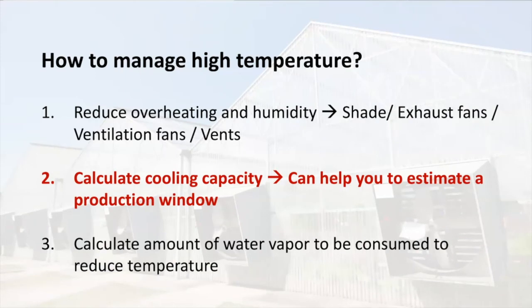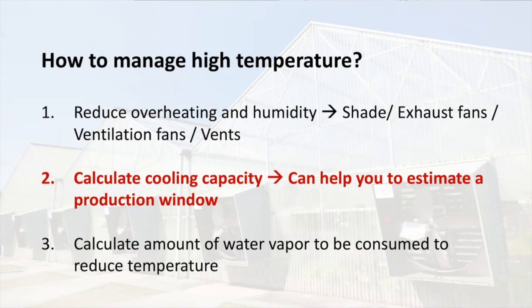You can use wet walls, exhaust fans, fogging systems, and fans to create cooling systems in your greenhouses. Step three — using the information we learned today, we can later learn how to do step three. Step three will be to calculate the amount of water to be evaporated in order to reduce the degrees you already know is possible to remove, so you can calculate precisely the amount of water you need to use in the system.